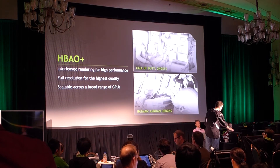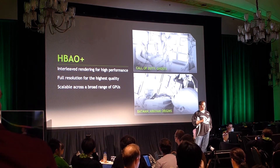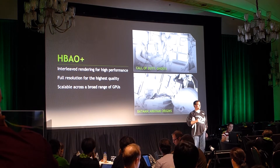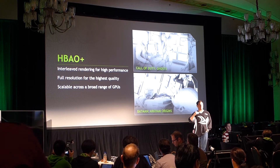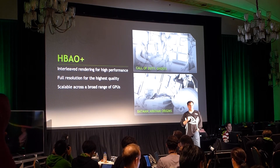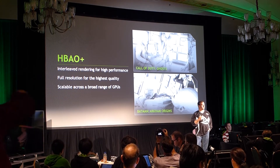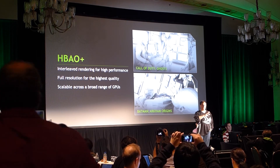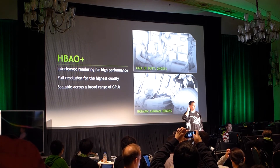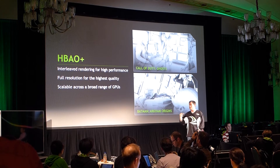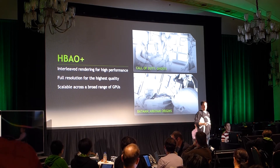Another technique we use for ambient occlusion is called Horizon-Based Ambient Occlusion, or HBAO. It's a technique for doing real-time detailed shadows as a form of ambient occlusion, and it's been integrated into a huge number of games. It's a highly optimized library for doing AO, scales across a wide range of GPUs, runs on NVIDIA and AMD, and is a fundamental building block for lighting in games.